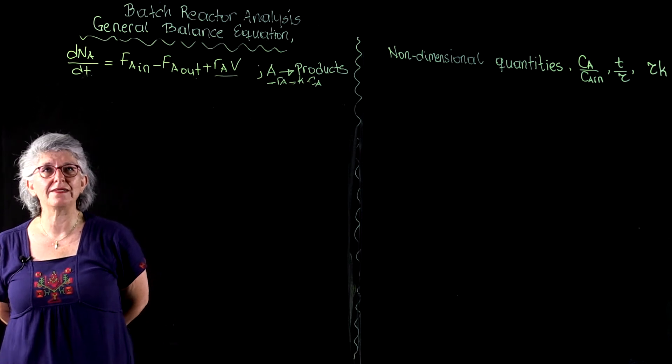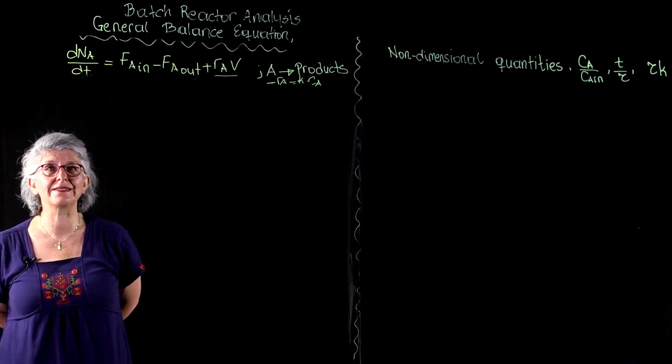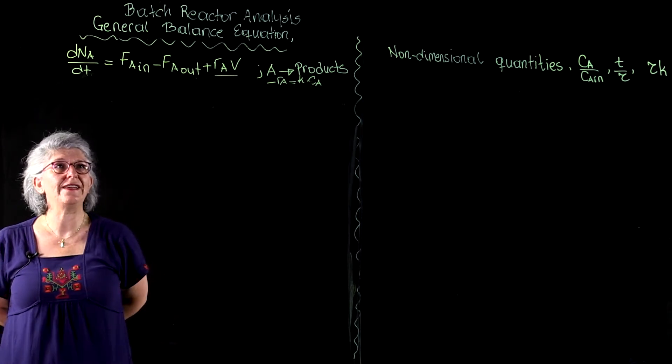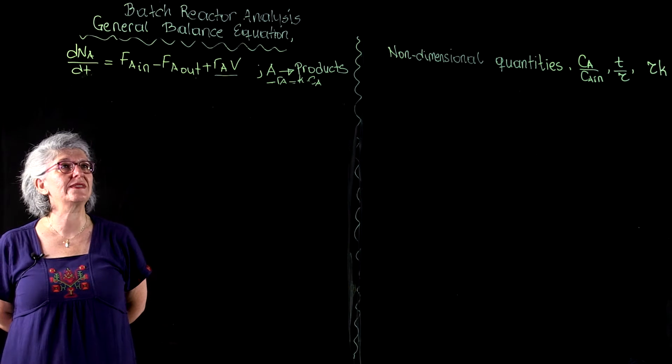Our general balance equation is reflected. It is dNa over dt, which is equal to Fa in minus Fa out plus Ra times V.